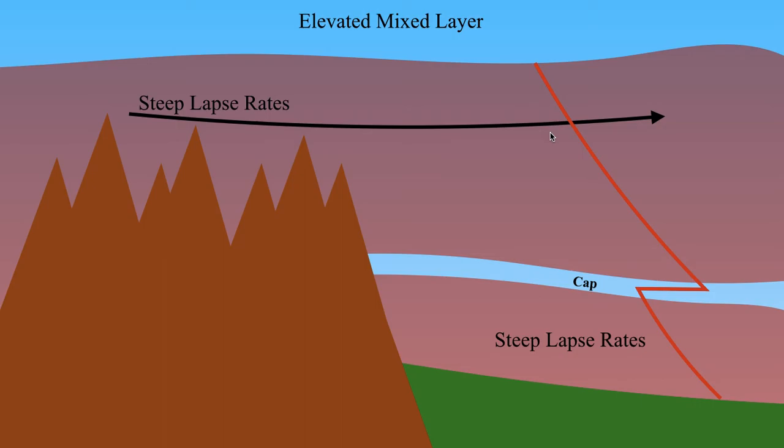This is more of a broad overview of why the plains tends to host some of the most significant hail events out of anywhere in the world. The reason is largely due to the fact that we have this unique topography. You have the Rocky Mountains generating these steep mid-level lapse rates.